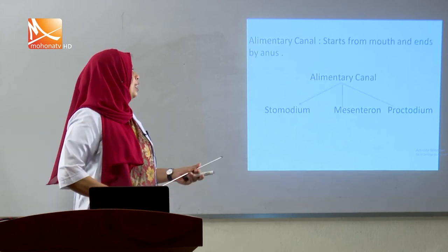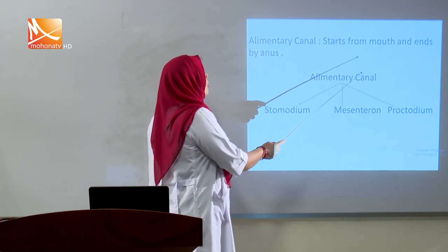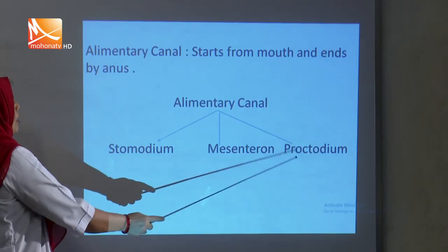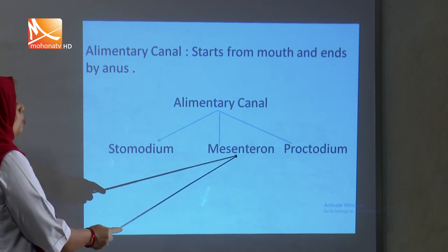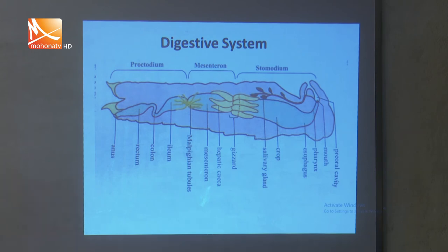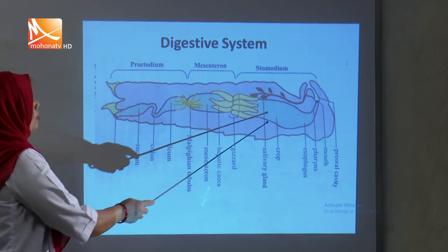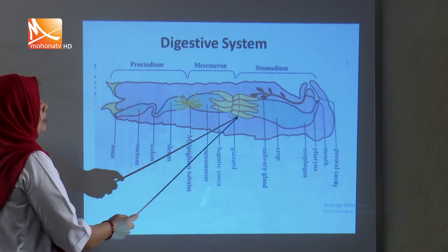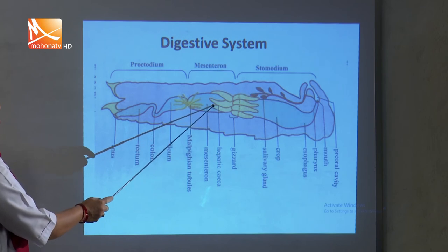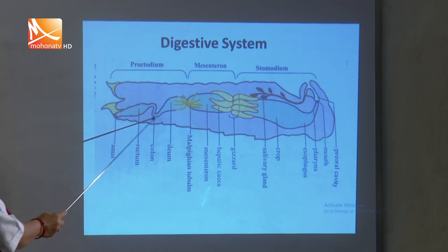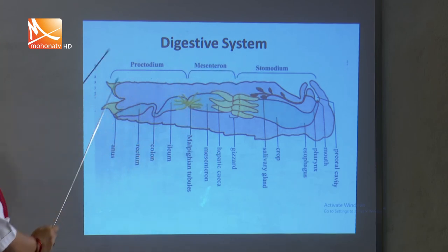The alimentary canal of Grasshopper is divided into three regions: stomodaeum (foregut), mesenteron (midgut), and proctodaeum (hindgut). The stomodaeum starts with the mouth and ends at the gizzard. The mesenteron follows after the gizzard. Below the mesenteron to the anus is the proctodaeum. The stomodaeum and proctodaeum originate from embryonic ectoderm, while the mesenteron originates from embryonic endoderm.